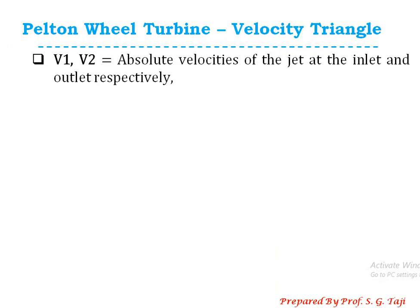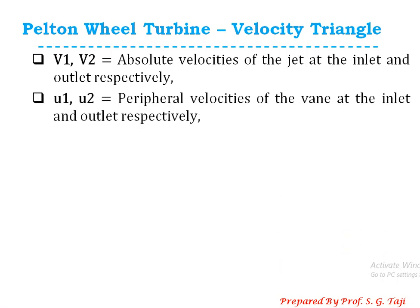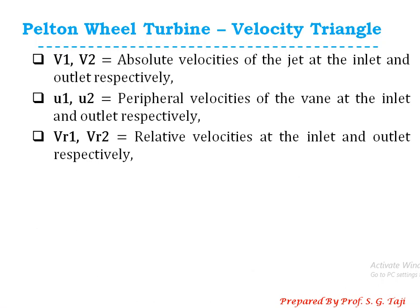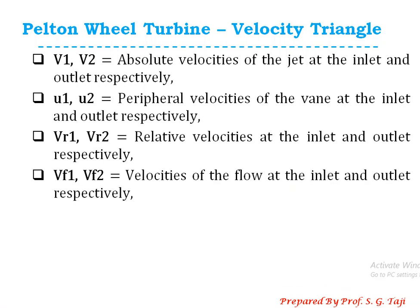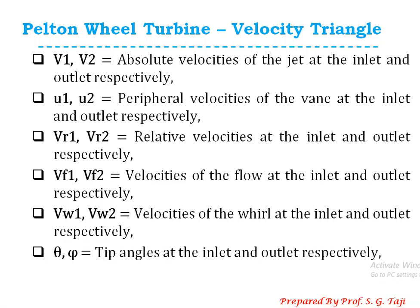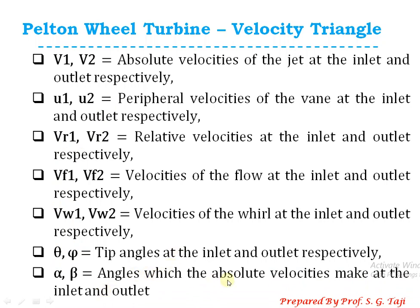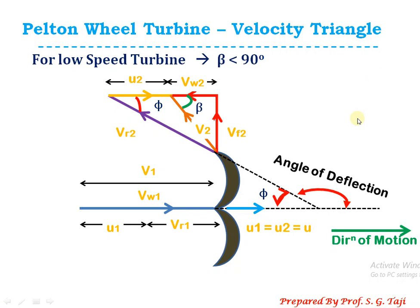Let's draw the velocity vector diagram at inlet and outlet. Here, suffix 1 refers to the inlet point and suffix 2 refers to the outlet point. V1 and V2 are the absolute velocities of the jet at inlet and outlet respectively. U1 and U2 are the peripheral (tangential) velocities of the vane. Vr1 and Vr2 are the relative velocities at inlet and outlet. Vf1 and Vf2 are the velocities of flow. Vw1 and Vw2 are the velocities of whirl. Theta and phi are the tip angles at inlet and outlet, and alpha and beta are the angles made by the absolute velocity with respect to the direction of motion.